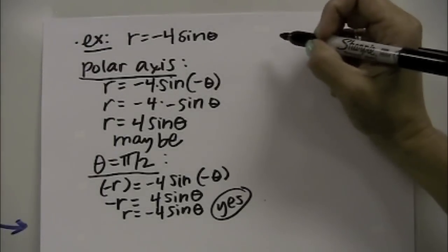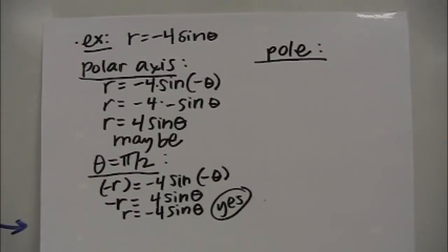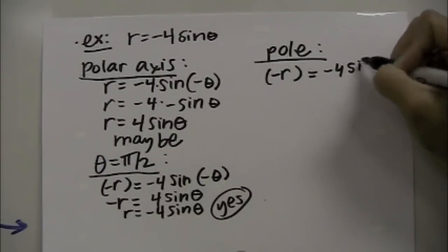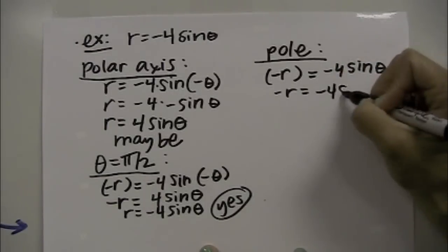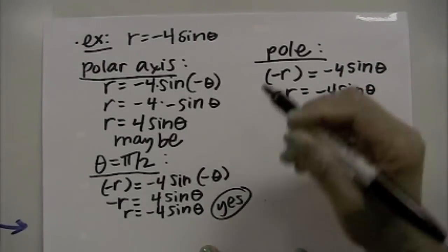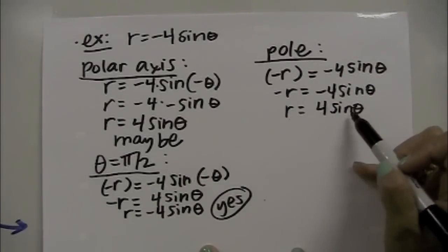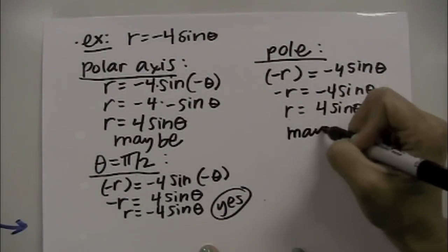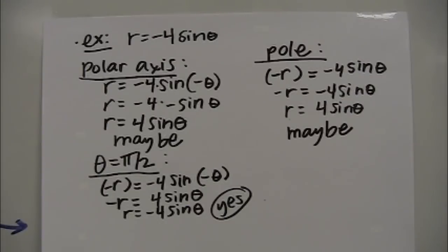The last test is symmetry with respect to the pole, which is the same as the origin. To check, replace r with negative r, leaving everything else the same. This gives −r = 4·sine(θ), which is the same as r = −4·sine(θ). Because that is not exactly like the original equation, we say it may or may not have symmetry with respect to the pole, which is the same as the origin.